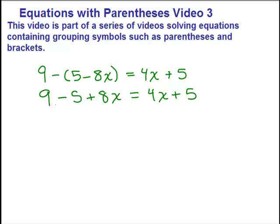And then we have to combine like terms here. So 9 minus 5 will be 4 plus 8x equals 4x plus 5.